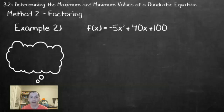The second method for finding the maximum or minimum values in a quadratic function is to factor. Factoring will lead us to the zeros, which we can use to find the equation of the axis of symmetry, which will lead us to the vertex.